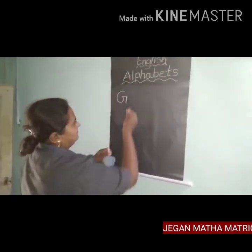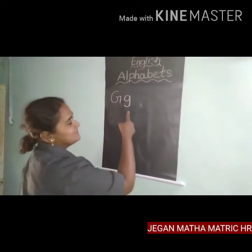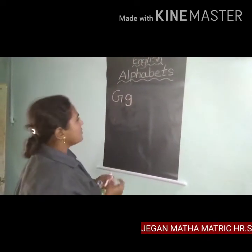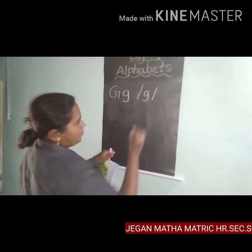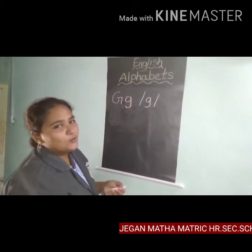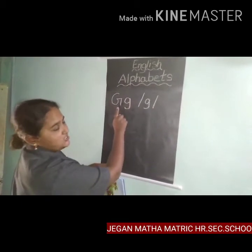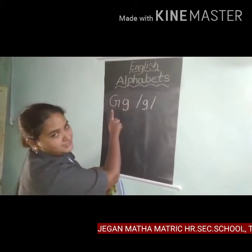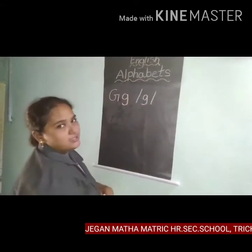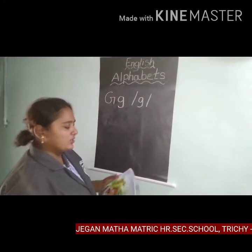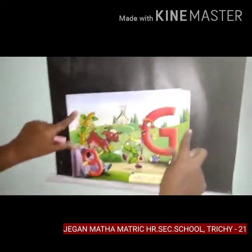What is this, children? Small G. What sound for G? Go. Let's say again, children: capital G, small G. What sound for G? Go.